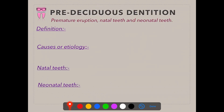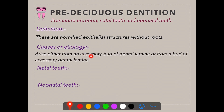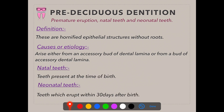Now coming to pre-deciduous dentition — the dentition before the primary or deciduous dentition. Also known as premature eruption, natal teeth, and neonatal teeth. These are hornified epithelial structures without roots, arising from an accessory bud or an extra bud from the dental lamina or an accessory dental lamina. Natal teeth are present at birth, and neonatal teeth are those that erupt within the first 30 days after birth.